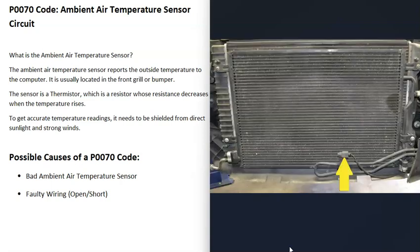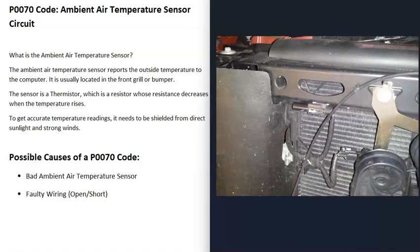This sensor is usually located up behind the front grill. Although it can be located differently, it's usually located up inside of the front grill somewhere. And one thing to know about this sensor is that it does need to be shielded from direct sunlight or from strong winds. So be sure to keep that in mind.